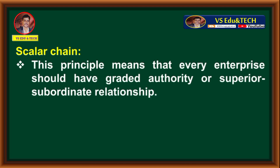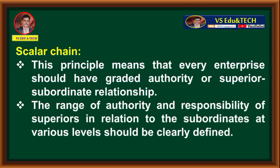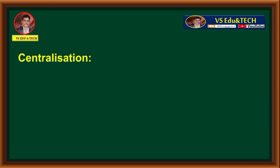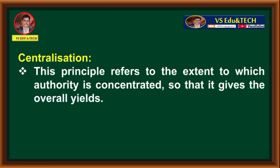Scalar chain: this principle means that every enterprise should have graded authority or superior-subordinate relationship. The range of authority and responsibility of superiors in relation to the subordinates at various levels should be clearly defined. Third, centralization: this principle refers to the extent to which authority is concentrated so that it gives the overall yields. These are all about authority and responsibility, scalar chain, and centralization in principles of management.